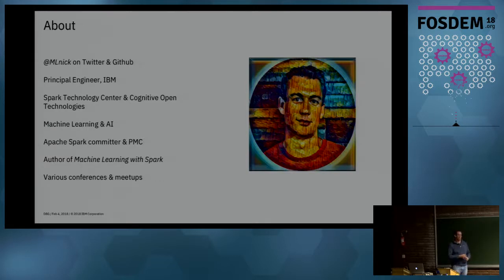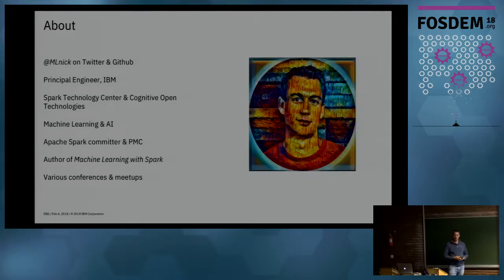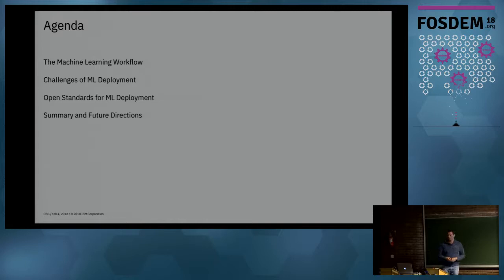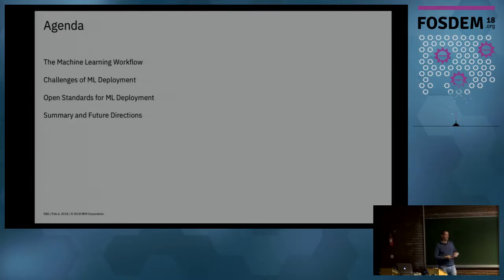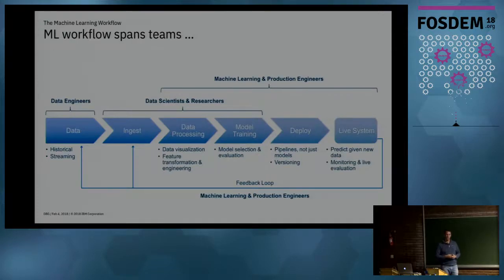I predominantly work on machine learning, AI, and deep learning, and a lot of my time is spent in the Apache Spark project — I'm a committer and PMC member there. I've written a fairly out-of-date book called Machine Learning with Spark. Today we'll cover the machine learning workflow, the challenges in deploying those pipelines to production, how open standards can help, and the work my team has been doing around this challenge.